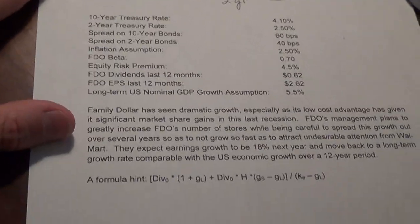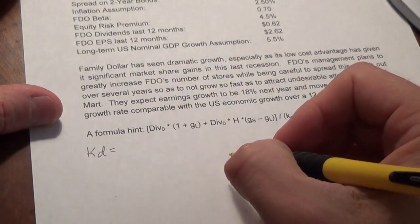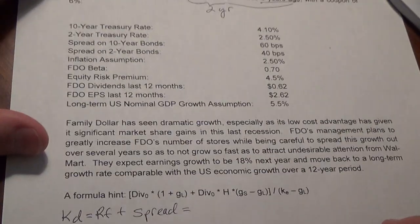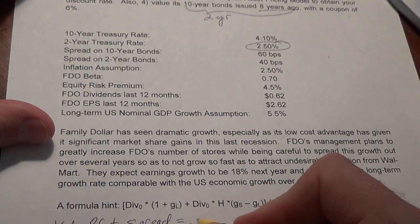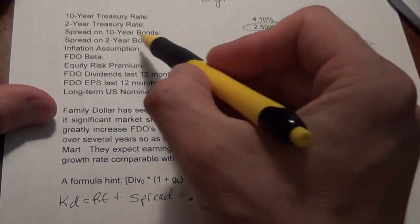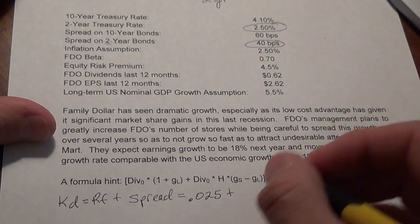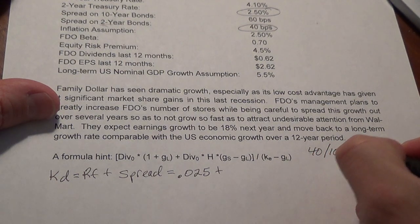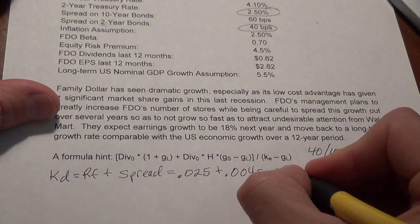The first step is to calculate our discount rates. KD, the cost of debt, equals the risk-free rate plus a spread. Since the bond is a 2-year bond, we use the 2-year treasury as our risk-free rate — that's 2.5%, or .025. Our spread for 2-year bonds with this rating is 40 basis points. 40 divided by 10,000 gives .004, so we add .004 to get a discount rate of .029.